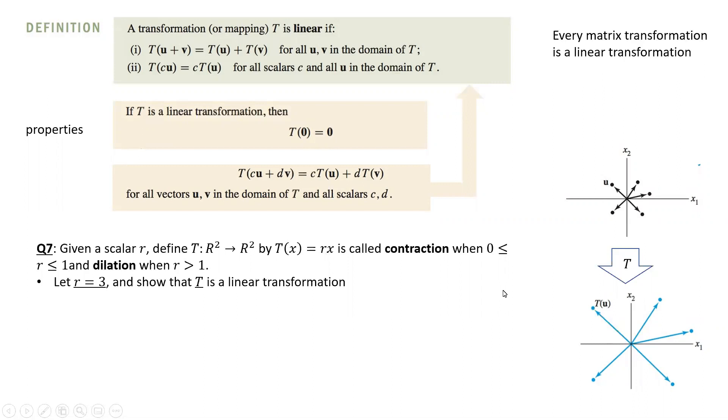But is it a linear one? What we're going to do is use our property number two here to test what happens when we apply this transformation to the linear combination. We take two arbitrary vectors, u and v, and two weights or numbers, c and d.